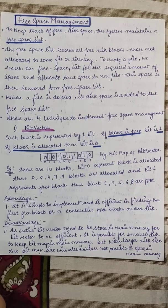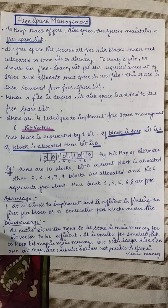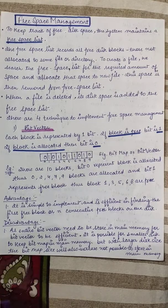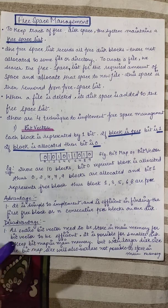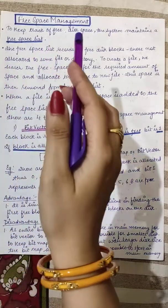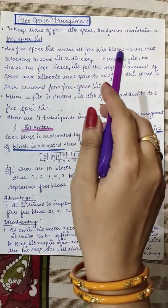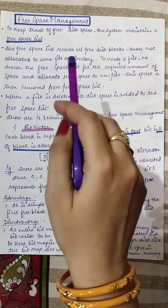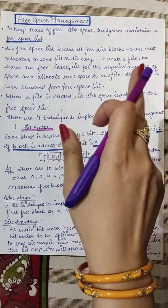The topic for today's class is about free space management. We'll be discussing the techniques which help the operating system to collect all the free space available on the disk after allocation of blocks to files and directories, or when files are deleted. That free space is added to the free space list. To keep track of the free disk space, the system maintains a free space list, which records all the free disk blocks — those blocks on the disk which are not allocated to any file or directory.